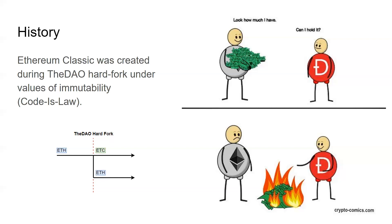On the Ethereum Classic side, the view was that the DAO ICO investors wrote a bad smart contract and should be responsible for those decisions. For example, if you lost your Bitcoin private key, are you responsible for that, or does Bitcoin have to hard fork your money back? Ethereum Classic took a more fundamentalist approach and decided not to fork. Ethereum forked and returned those DAO ICO investors' money, the original chain remained and rebranded to Ethereum Classic, and the fork chain continued as Ethereum.